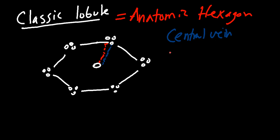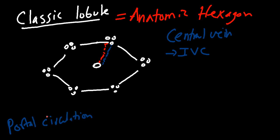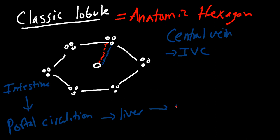The central vein drains from the liver to the inferior vena cava and eventually into systemic circulation. To recap the portal circulation: nutrients absorbed in the intestines go to the hepatic portal vein, then to the liver, then to the inferior vena cava, and finally to the heart to be pumped to the body.